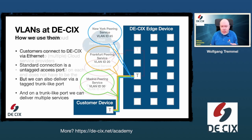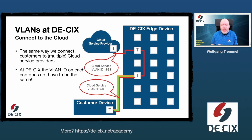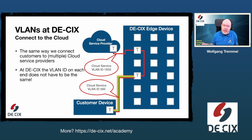With the introduction of cloud services, we also started to deliver cloud services tagged with a VLAN ID on the same physical port. In this example, you're getting a cloud service tagged with VLAN ID 500 on the customer port. Since cloud providers often have their own VLAN ID range, we translate the VLAN ID within our infrastructure. So for cloud services, the VLAN ID doesn't have to be the same. Basically the same is true for peering services — customers can select their own VLAN ID on which they would like to receive each service.